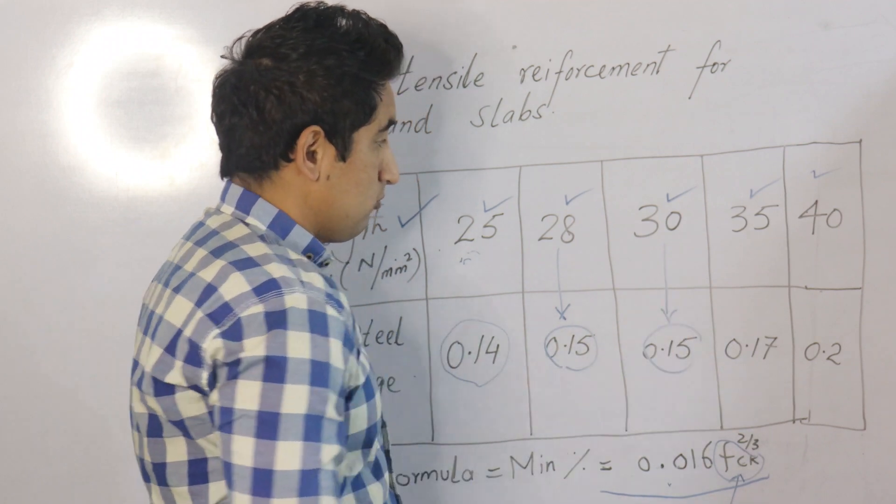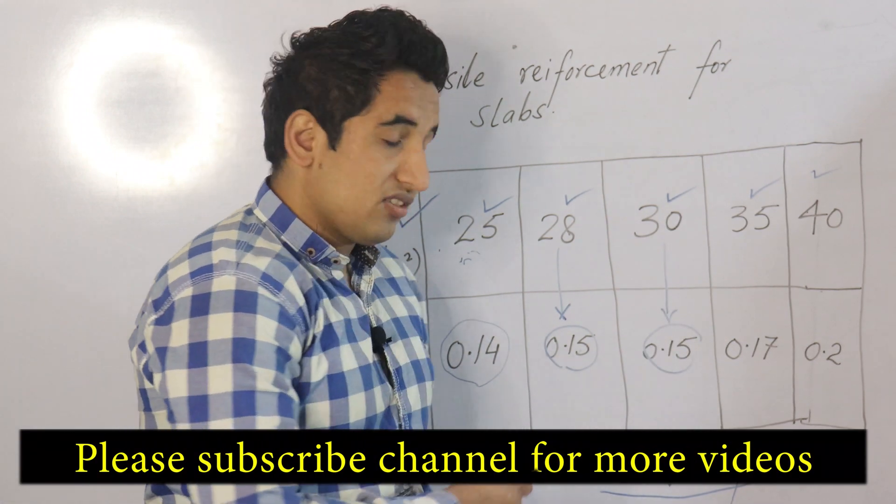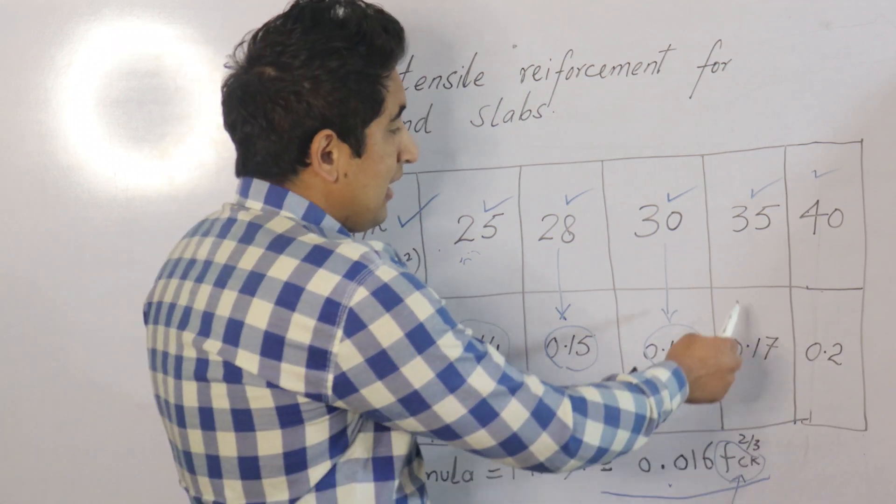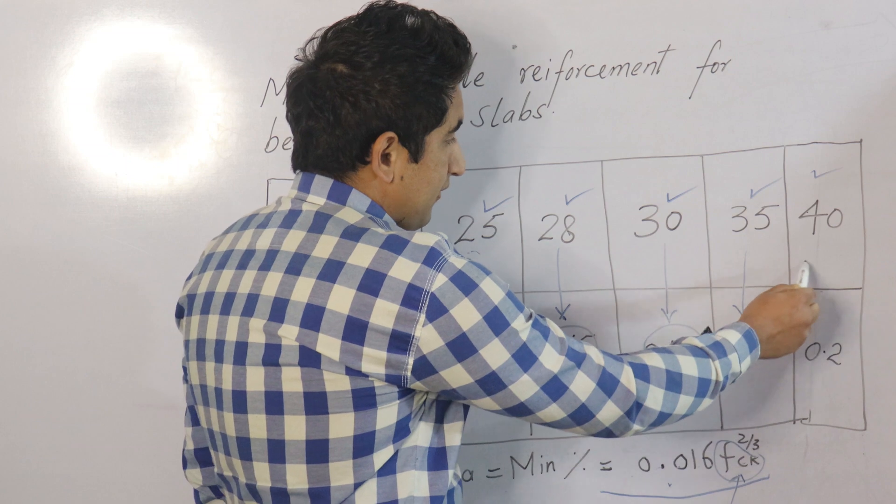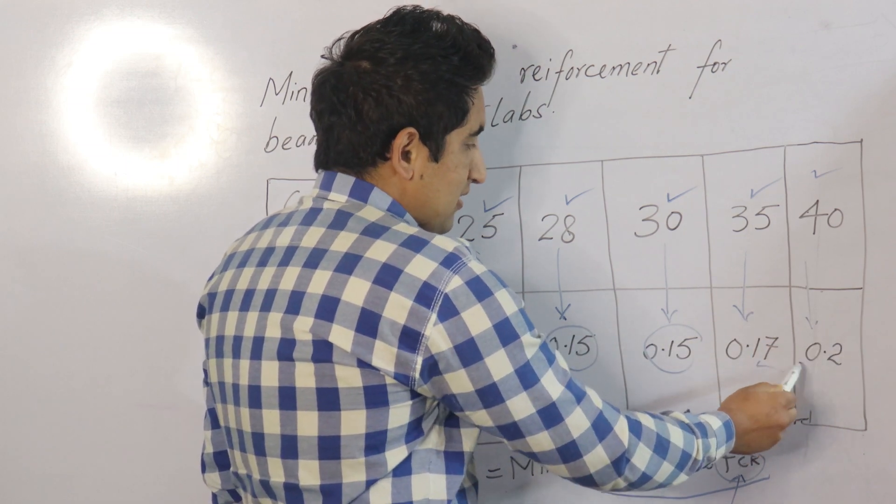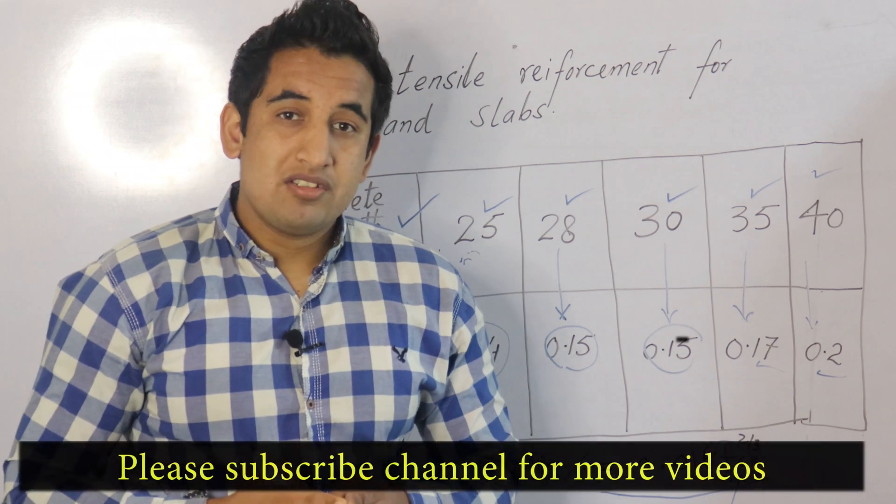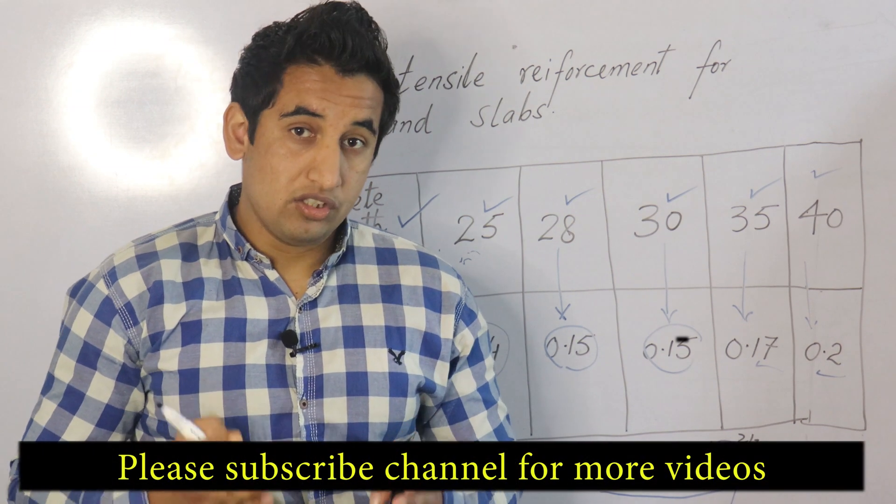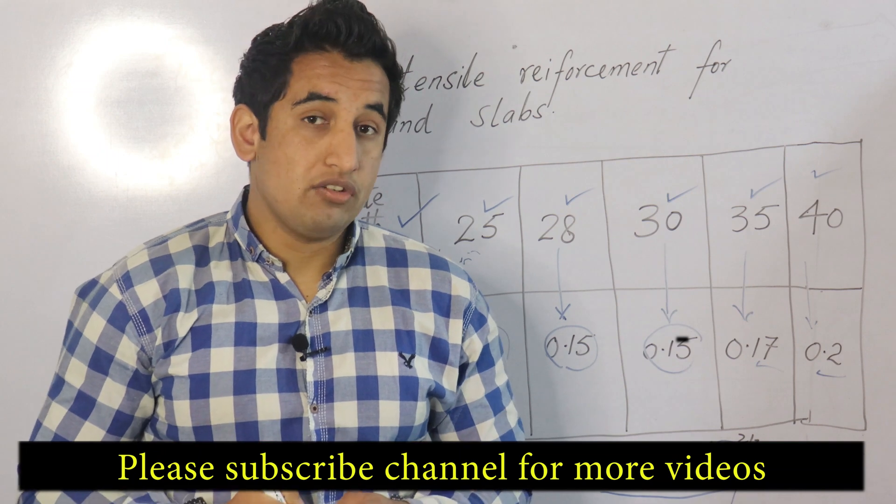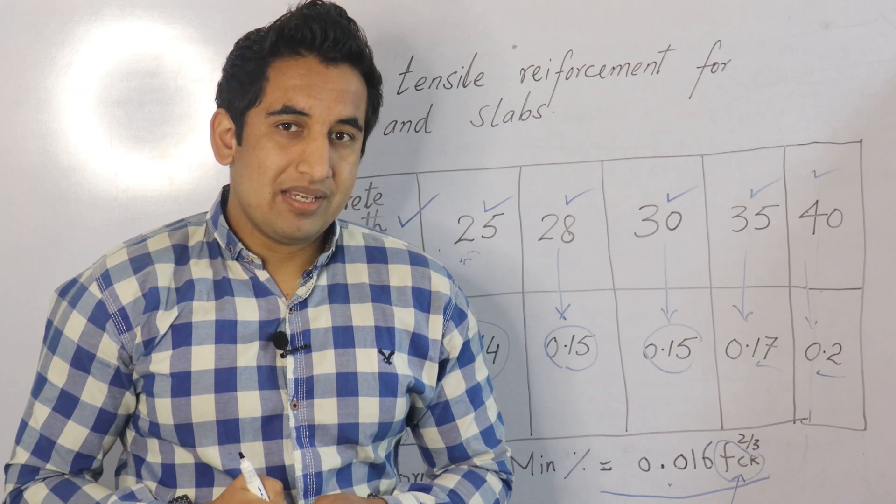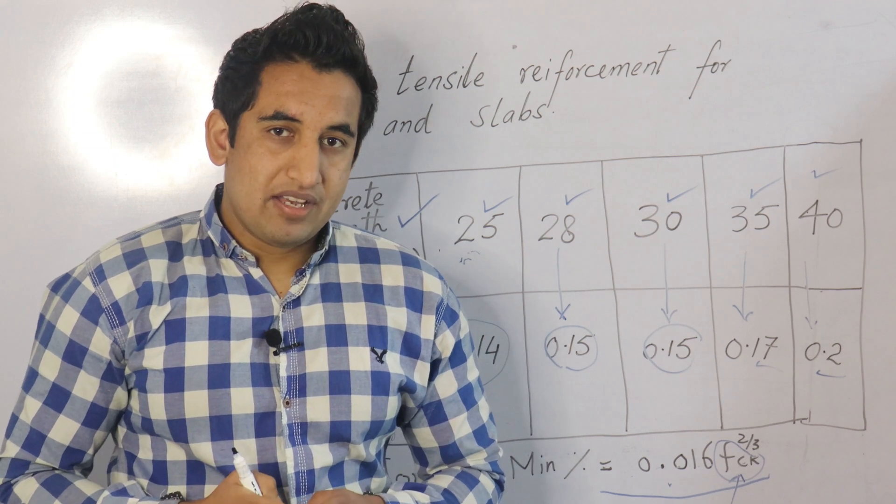For 35 and 40 grade of concrete it's 0.17 and 0.2 respectively. These are the minimum steel percentages that you can use whenever you are going to design beam or slab. These are basically minimum requirements of steel that you have to consider while designing any kind of structure.